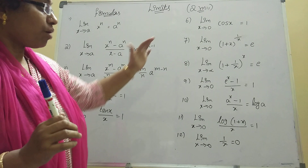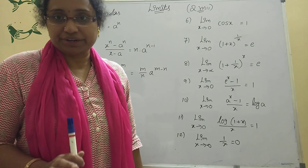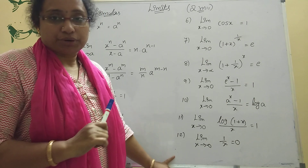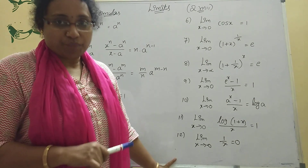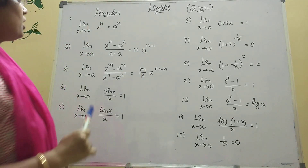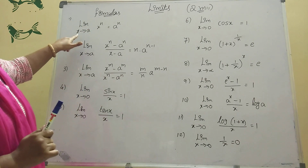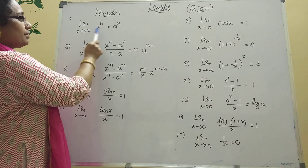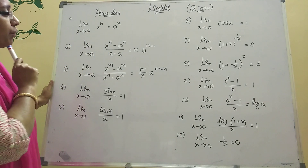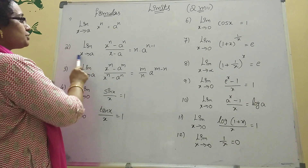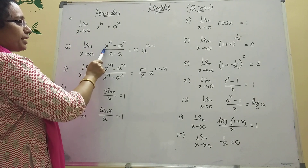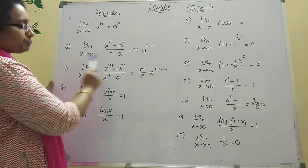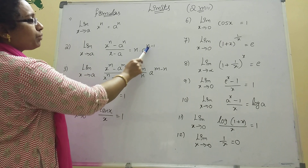The formulas I have written here are very important. In limits, I wrote 12 formulas total. Once recall this. Limit x tends to a, x power n equals a power n. Next: limit x tends to a, x power n minus a power n divided by x minus a equals n into a power n minus 1.